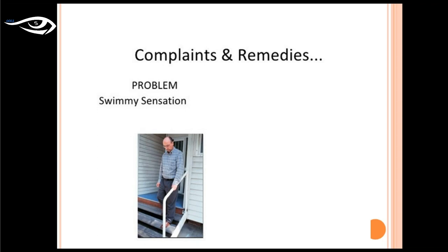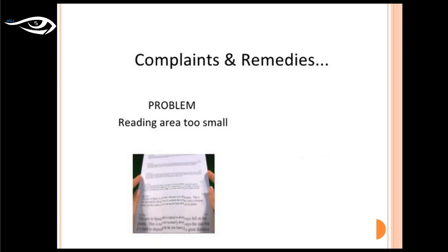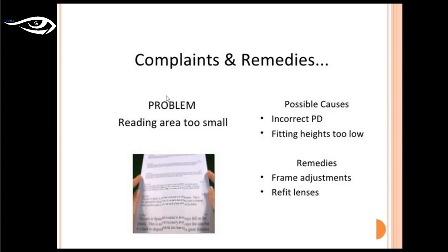If the patient experiences a swimming sensation or difficulty climbing stairs, possible causes include incorrect PD, incorrect height, inadequate pantoscopic tilt, problems with facial wrap, or adaptation issues. Treatment: increase facial wrap or increase pantoscopic tilt. If the reading area appears too small and the patient has to look at the very lower margin of the frame to read, the possible cause is incorrect PD or fitting height issue — do frame adjustment or refit the lenses.